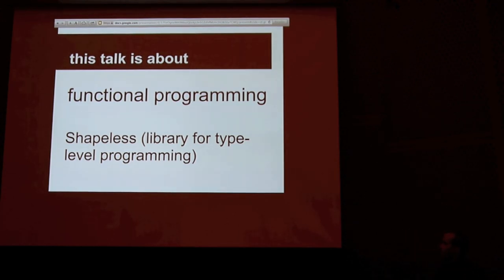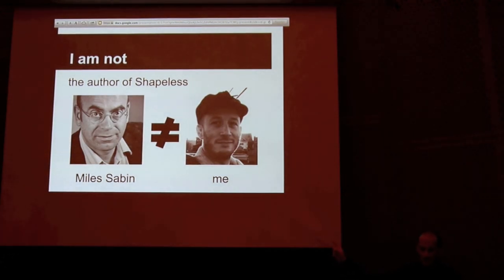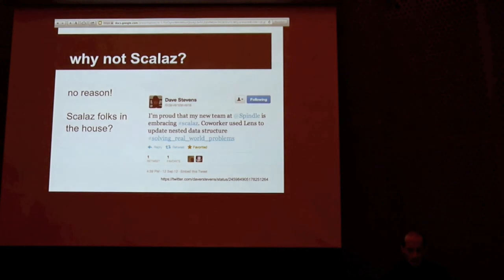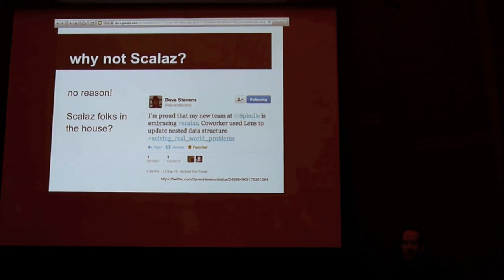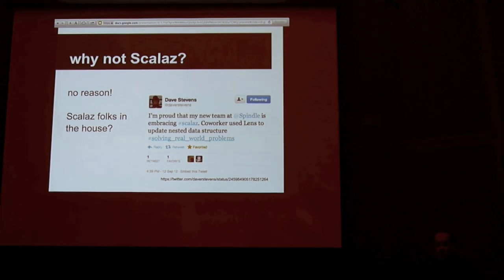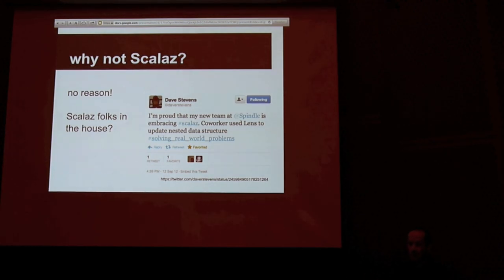This is a talk about functional programming — everything we're doing is going to be immutable. It's also about Shapeless, this library by Miles Sabin, not by me. This other library, ScalaZ, also provides lenses. Why didn't I pick it instead of Shapeless for the examples? There's really no reason except that I was interested in Shapeless and wanted to find out more about it. This is not an advocacy talk where I convince you that the Shapeless lenses are the best ones. There are people in the audience who use ScalaZ at work, and if you want to do some compare and contrast, that would be awesome.